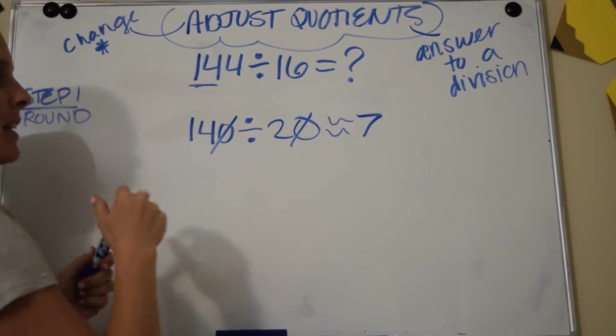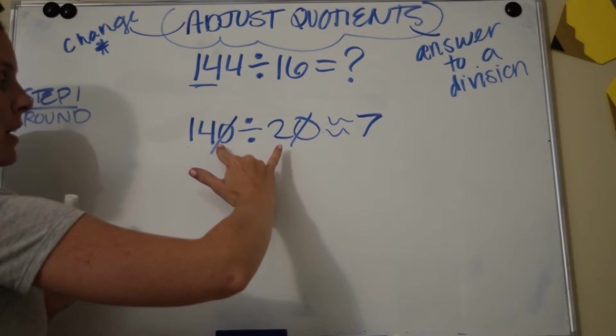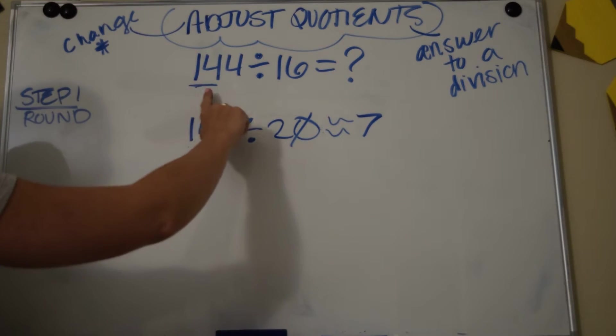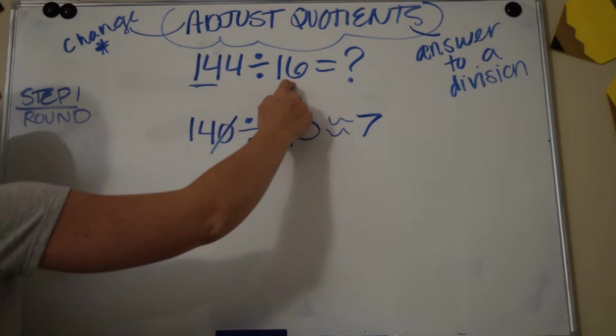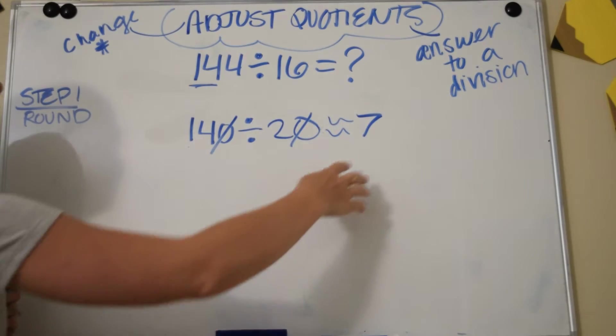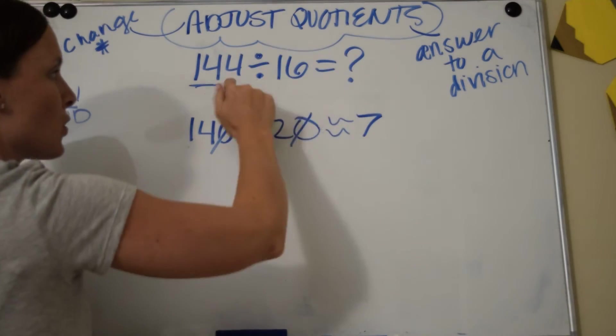Because again, I rounded and I rounded numbers that were compatible so I could come up with an estimated guess. I'm saying that 144 divided by 16 might be something around 7. So what we're going to do is we're going to take that 7 and adjust it until we find the right answer to this original problem.